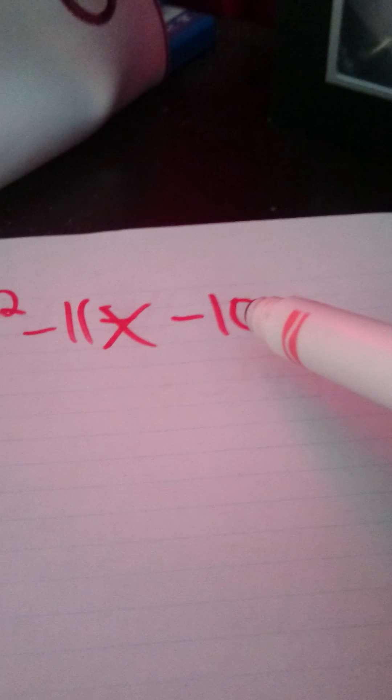So, as with normal factoring, what you will do is you will have a number that multiplies into this one and adds into this one. But in this equation we have a problem — we have 6 at the beginning. We will have to multiply the 6 by the 10, which will give us negative 60, and then we just put negative 11 at the bottom.